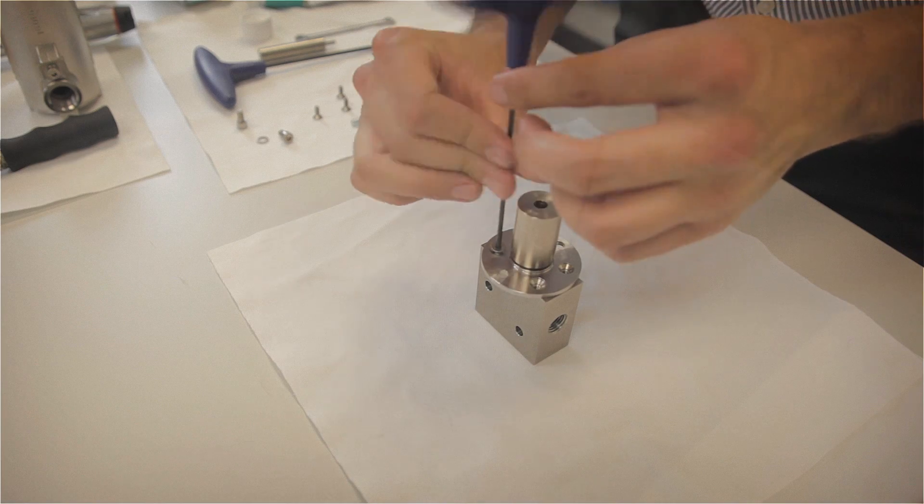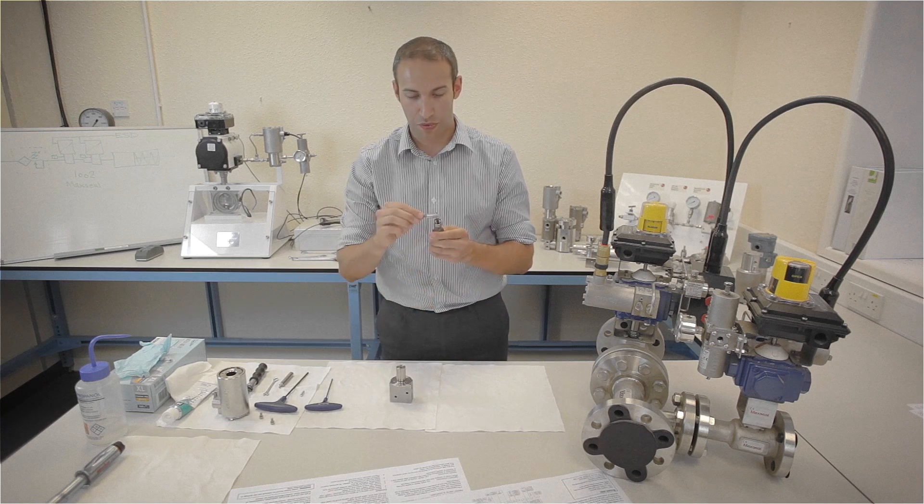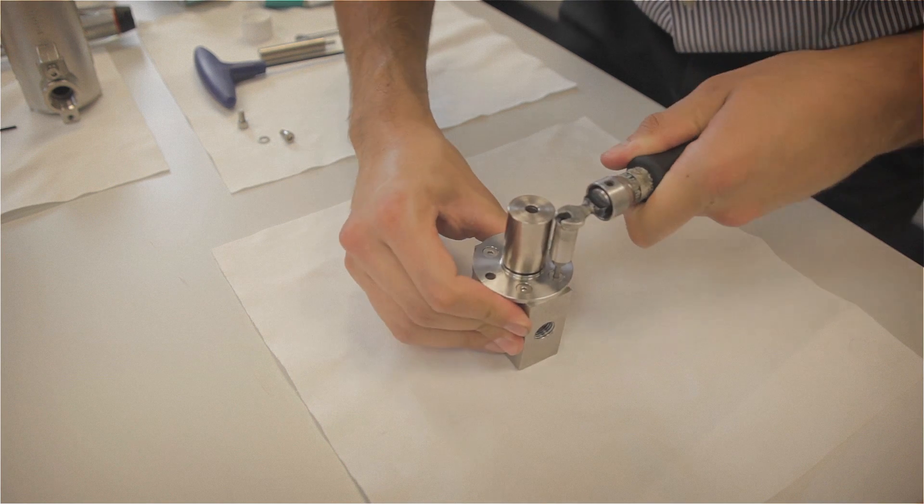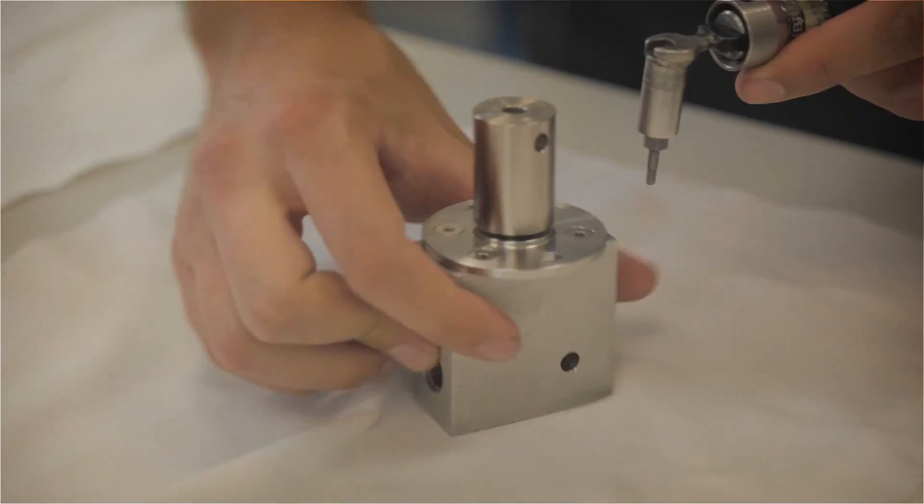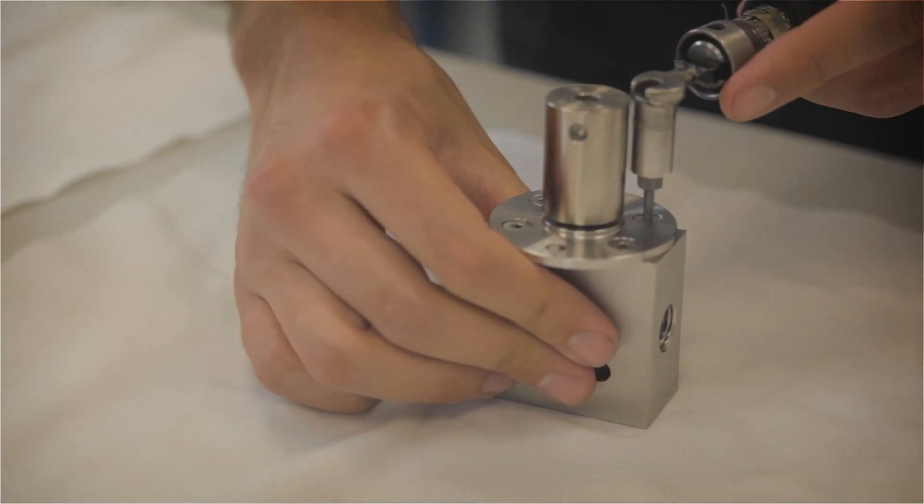You'll then need to take a 2.5mm hex key and screw up the four countersunk screws. Using the torque wrench with the 2.5mm hex key, torque the four bolts in an equal and opposite radial pattern as per the maintenance manual.